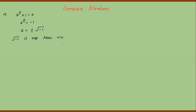So what have we done? We have imagined an imaginary number, and we symbolize this imaginary number as iota — which is a Greek letter. Iota is not a real number; it is an imaginary number. Iota is equal to √(-1).